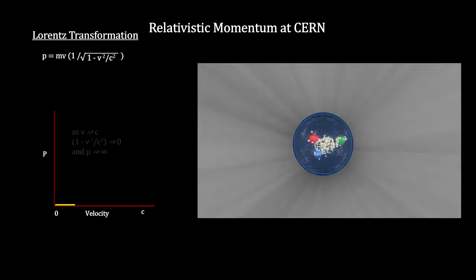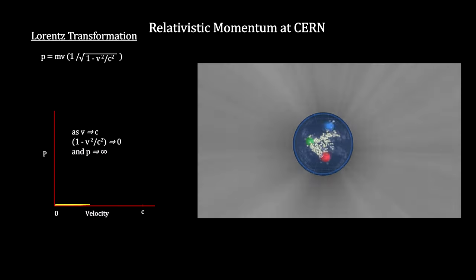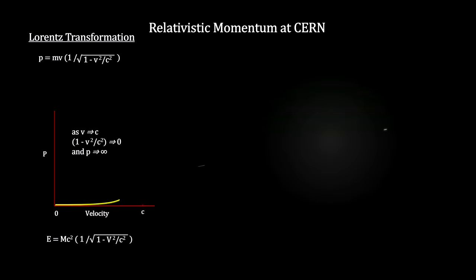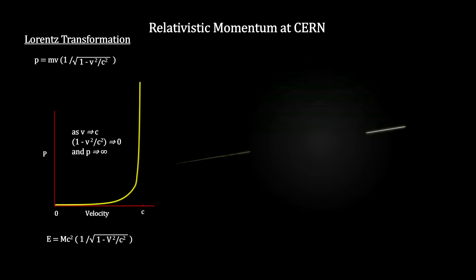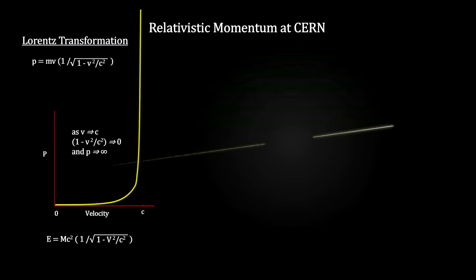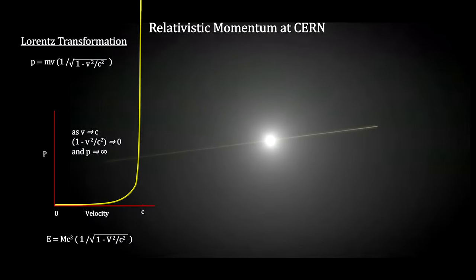The fact is that as the velocity gets closer to the speed of light, the momentum increases without bound, and the energy required to get it even closer to the speed of light grows to be more energy than exists in the universe. This is one of the reasons why we say that nothing with mass can ever reach the speed of light.